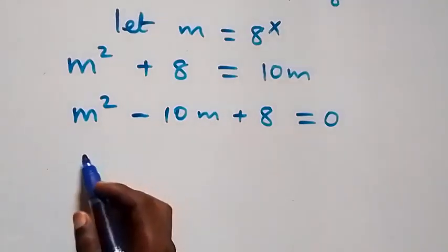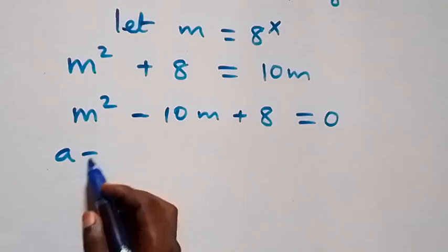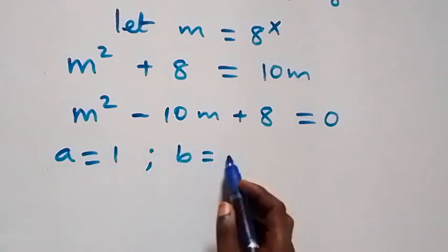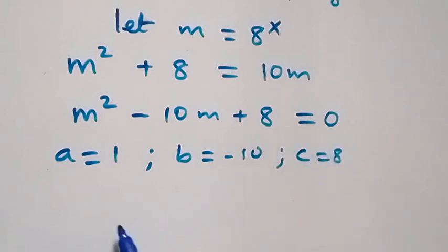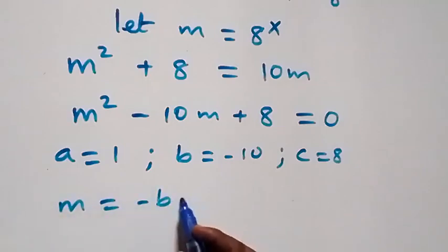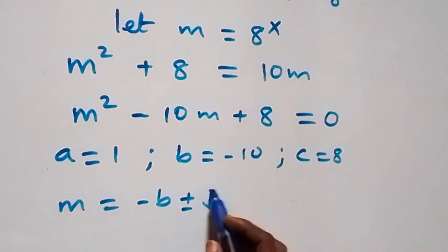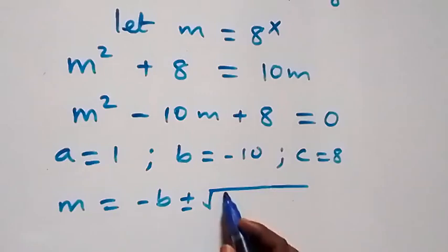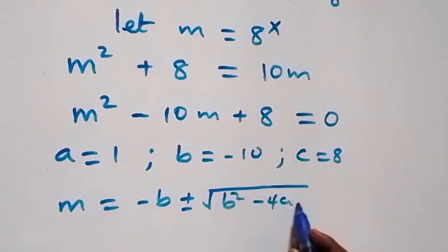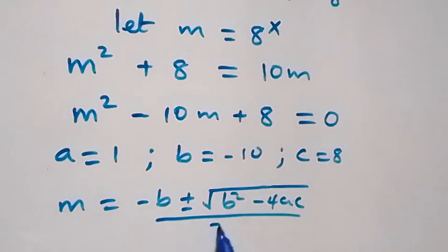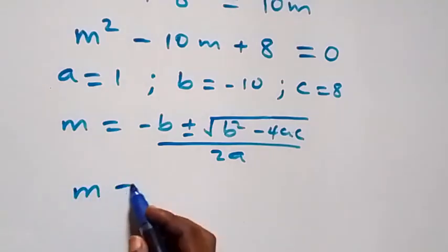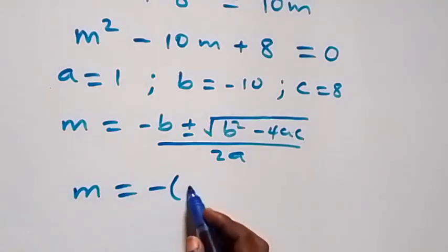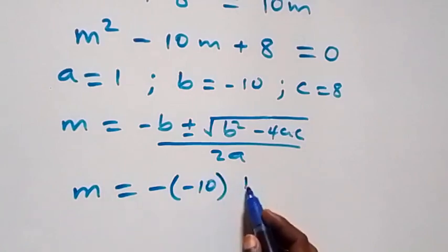Now we have a quadratic equation where a equals to 1, b equals to minus 10, and c equals to 8. From the formula, m equals to minus b plus or minus square root of b squared minus 4ac over 2a.